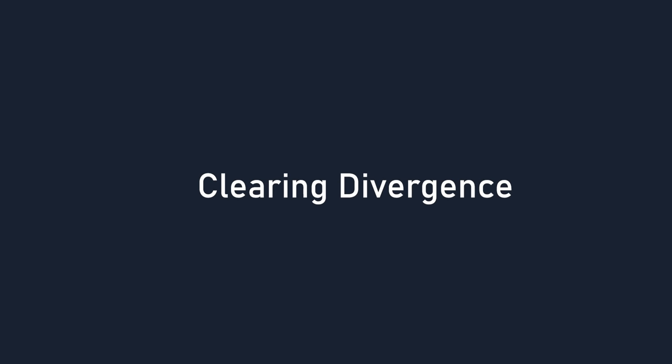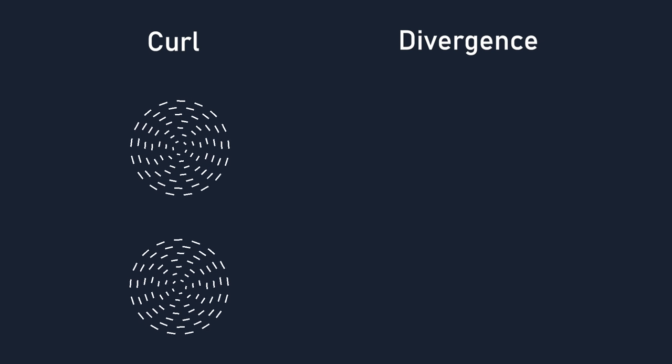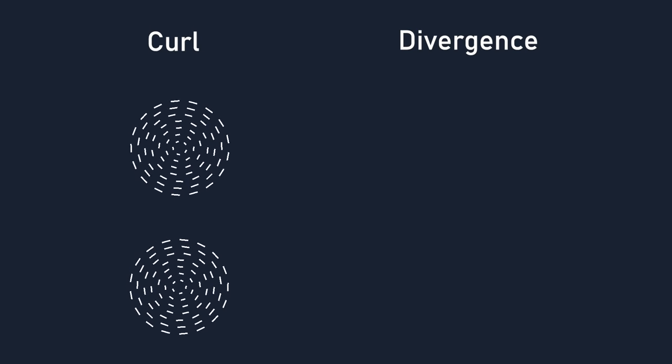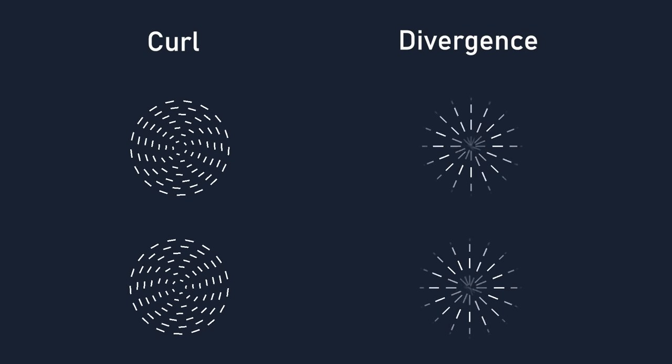Clearing divergence. I'd say this is the most complicated step in the whole video, so strap in. To understand this step, we must first understand the concepts of curl and divergence. Essentially, in a vector field, curl is when the vectors swirl around, and divergence is when the vectors either point away from each other or point towards each other. These two are properties universal to every vector field.